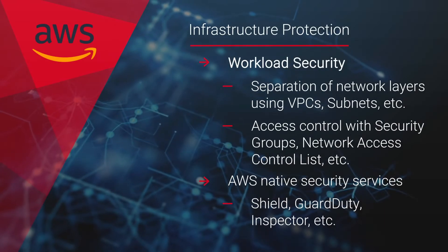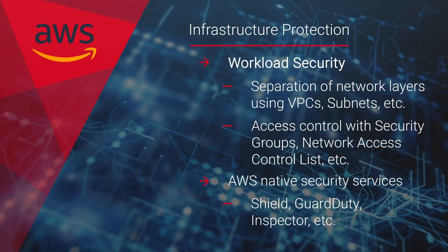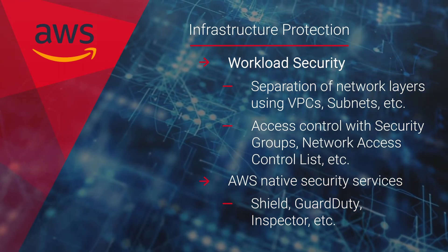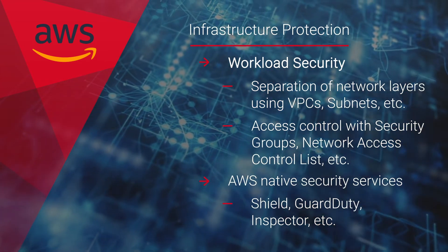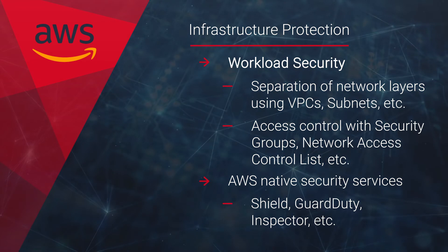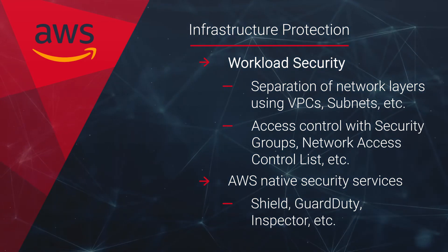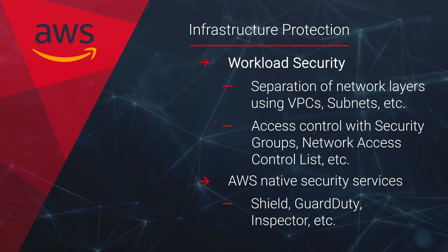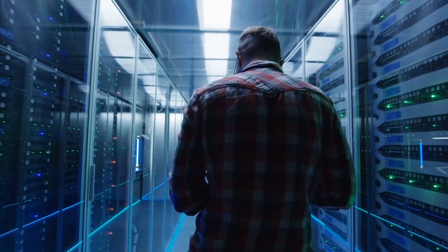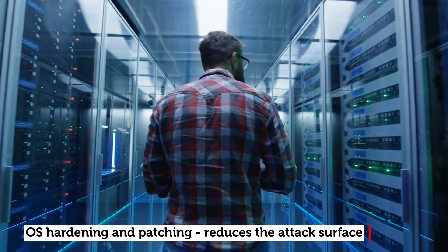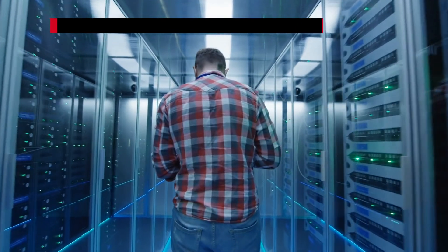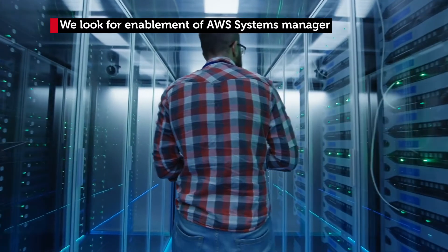The infrastructure protection assessment comes next, where separation of network layers using VPCs, subnets, route tables, and access control with security groups, network access control lists, firewalls, etc. are assessed. We also look for enablement of AWS native security services or similar third-party services such as Shield, GuardDuty, Inspector, etc. OS hardening and patching is a criteria that's important for reducing attack surface, and for this we look for enablement of AWS Systems Manager or other applicable third-party mechanisms.